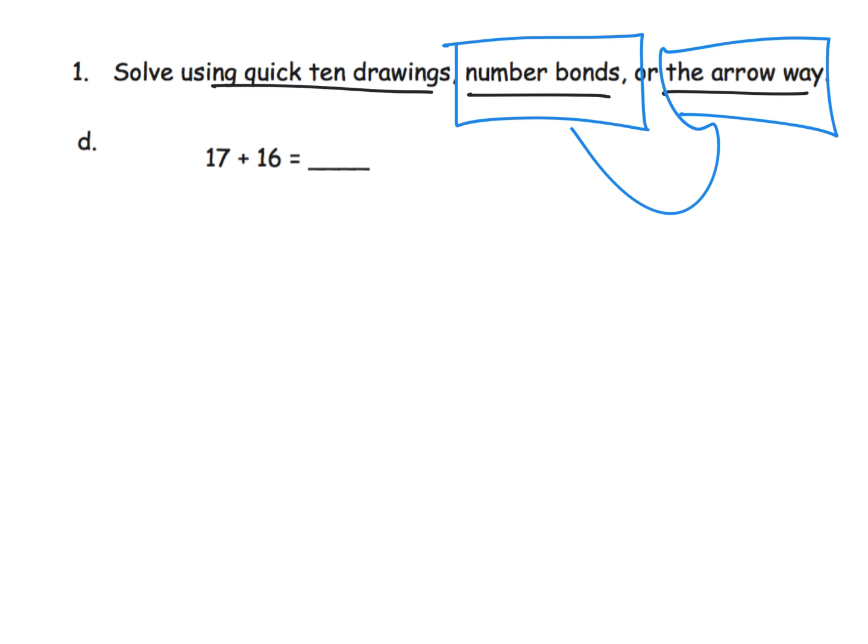So I think what I'm actually going to do on this problem is just jump straight to the number bonds. A couple of different ways that we can arrange those number bonds. I think one of my favorites is just decomposing based on the place value. So I'm going to decompose 16 to be 10 and 6.